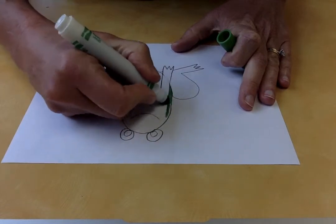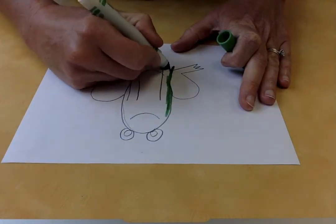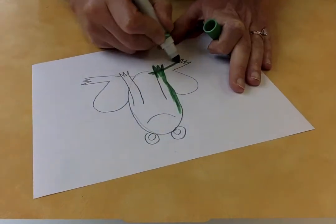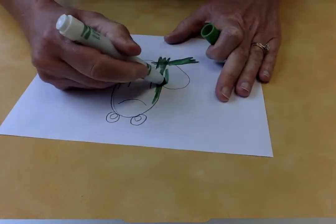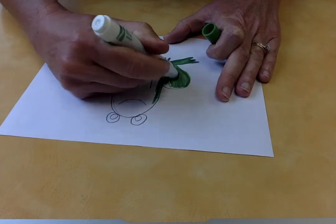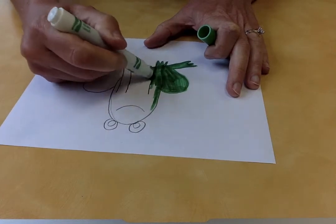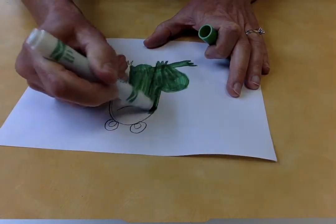I'm gonna color him with my marker. Again, you don't have to worry too much about coloring inside the lines because we are gonna cut the frog out. It's the same marker I used to make my water. You can see it still works just fine.